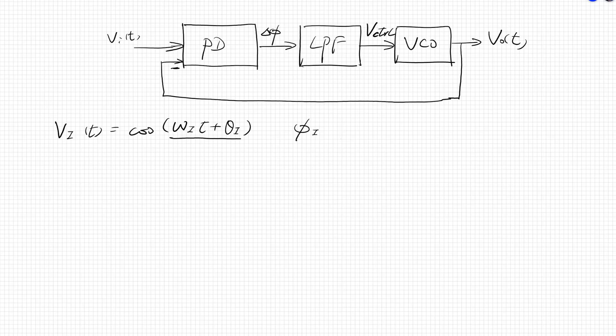The output of the VCO is VO. It's also a sinusoidal function, cosine omega O t plus theta O. And this entire phase here is phase phi O. So the phase difference of these two signals, when we compare at the phase detector, the output is delta phi equals omega i minus omega O times t plus theta i minus theta O.